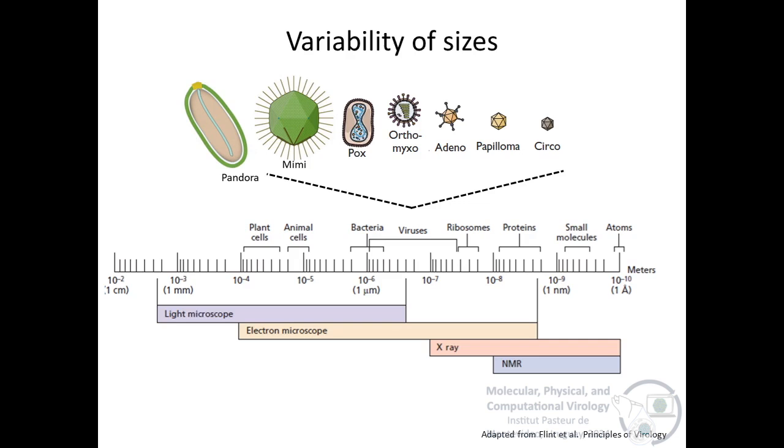The discovery of these giant viruses has challenged the concept of viruses because they have a very complex structure and a size that makes them visible under a light microscope. Even today, other giant viruses have been discovered, such as pandoraviruses or pithoviruses, which are about one micron in size.